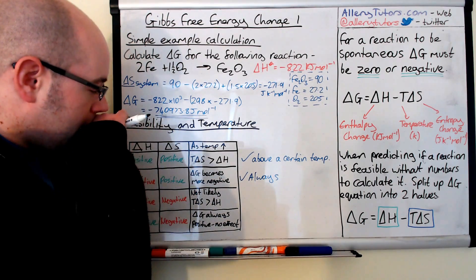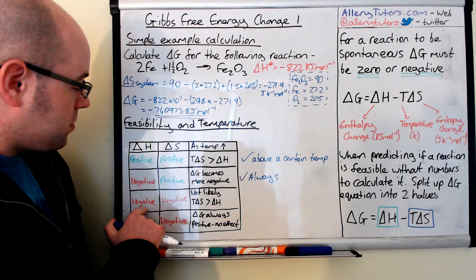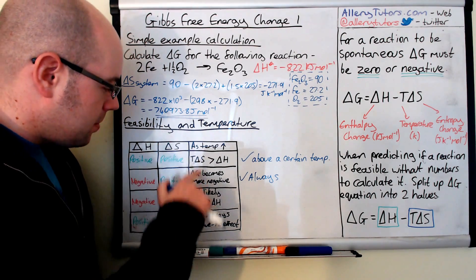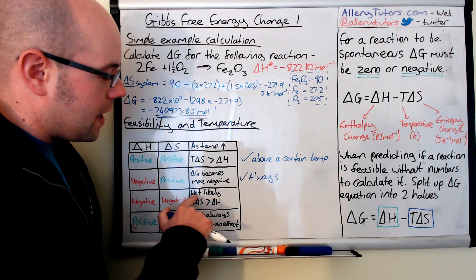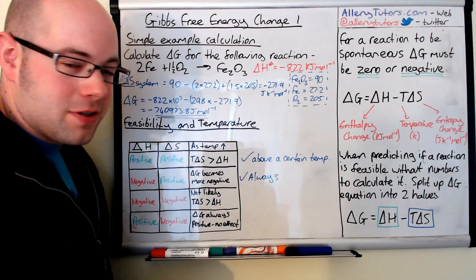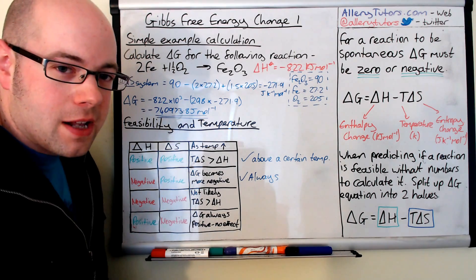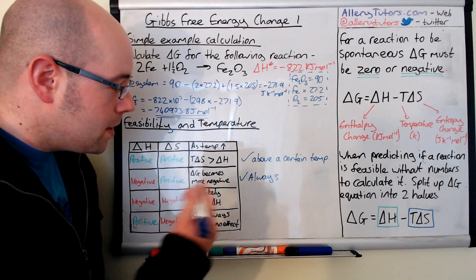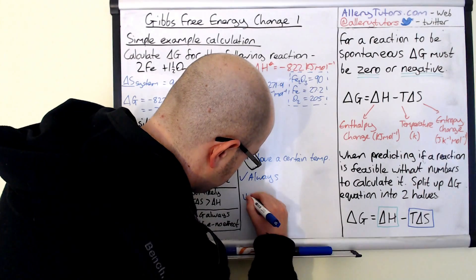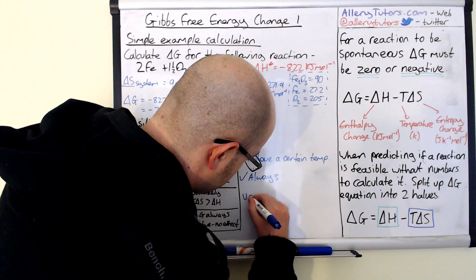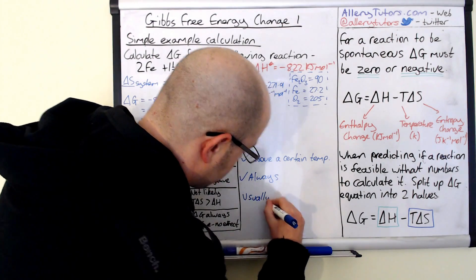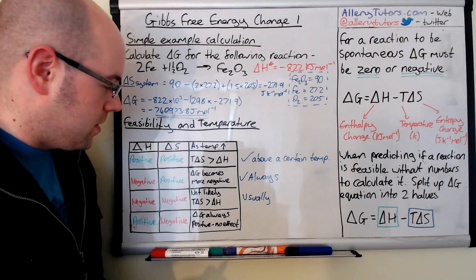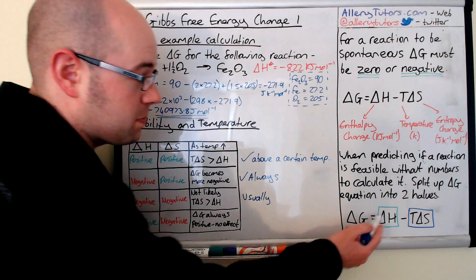If delta H is negative, a favourable exothermic process, but delta S is also negative, then it's not likely that T delta S will be greater than delta H. Whether it's feasible does depend on the temperature, so the reaction is usually feasible but it depends on the temperature at which this actually happens.